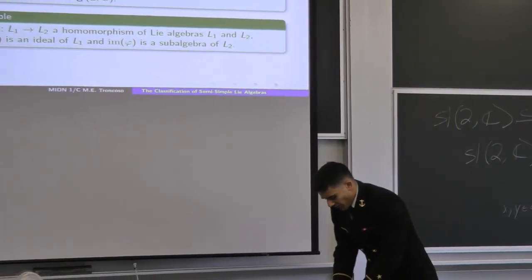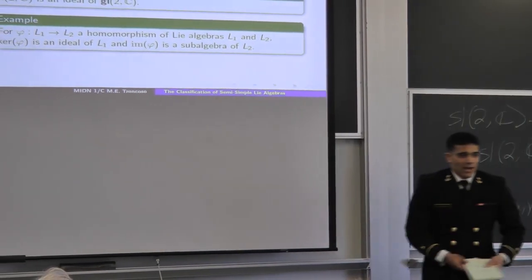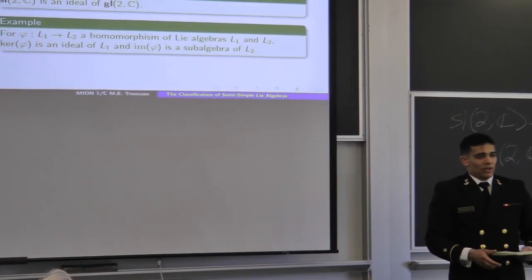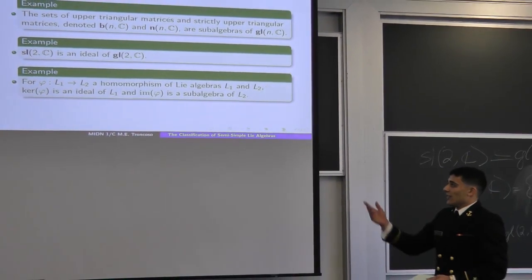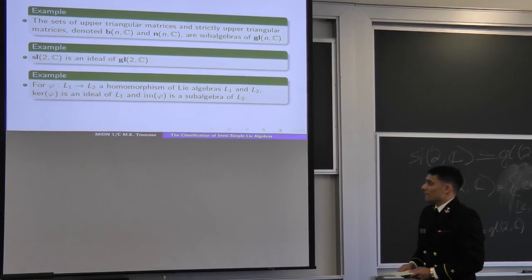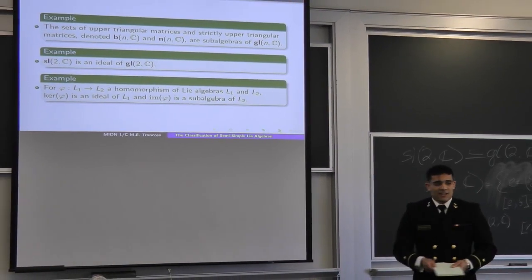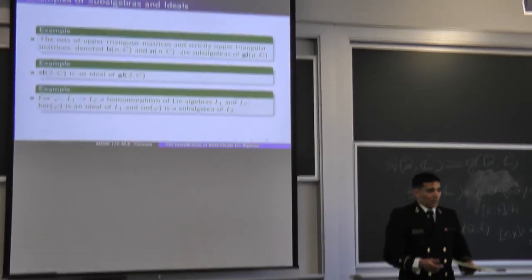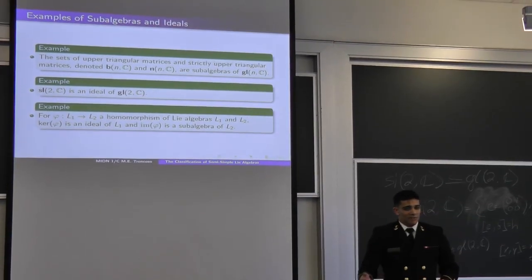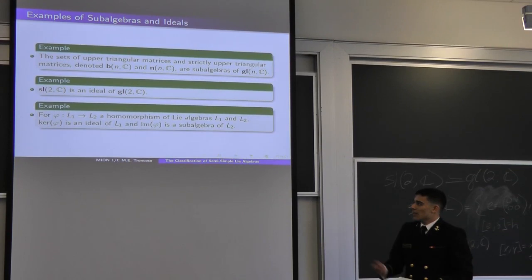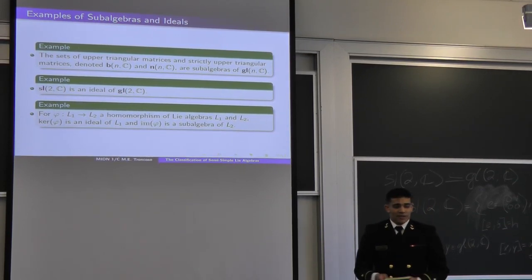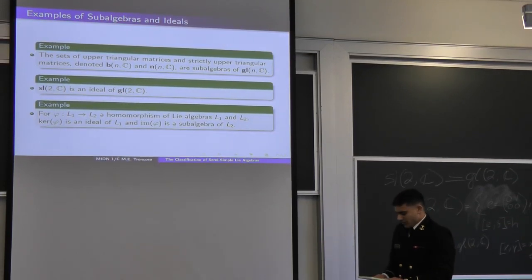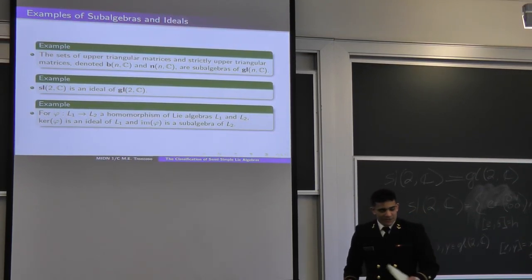Back to homomorphisms — we want to look at the kernel and image. The kernel of φ is always an ideal of L₁, and the image of φ is always a sub-algebra of L₂. That comes just from the definition of those sets.